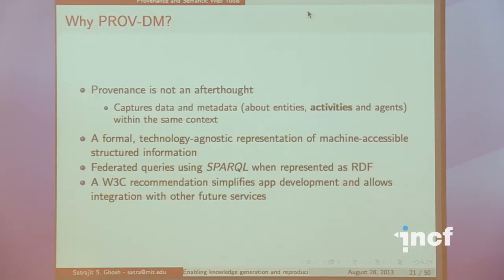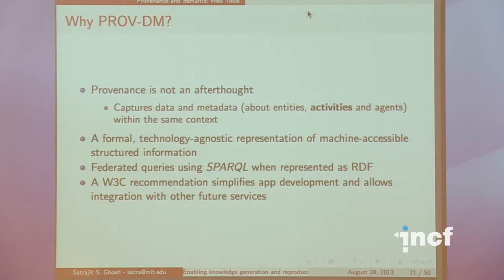Why PROV-DM? One key thing is that provenance is not an afterthought. In existing models, provenance was tacked on; in this case it exists directly with the data and the metadata. It's a formal, technology-agnostic representation of machine-accessible structured information — important because as data gets bigger, machines will do much of our querying. SPARQL queries using RDF is a W3C recommendation that simplifies app development and allows integration with other future services.